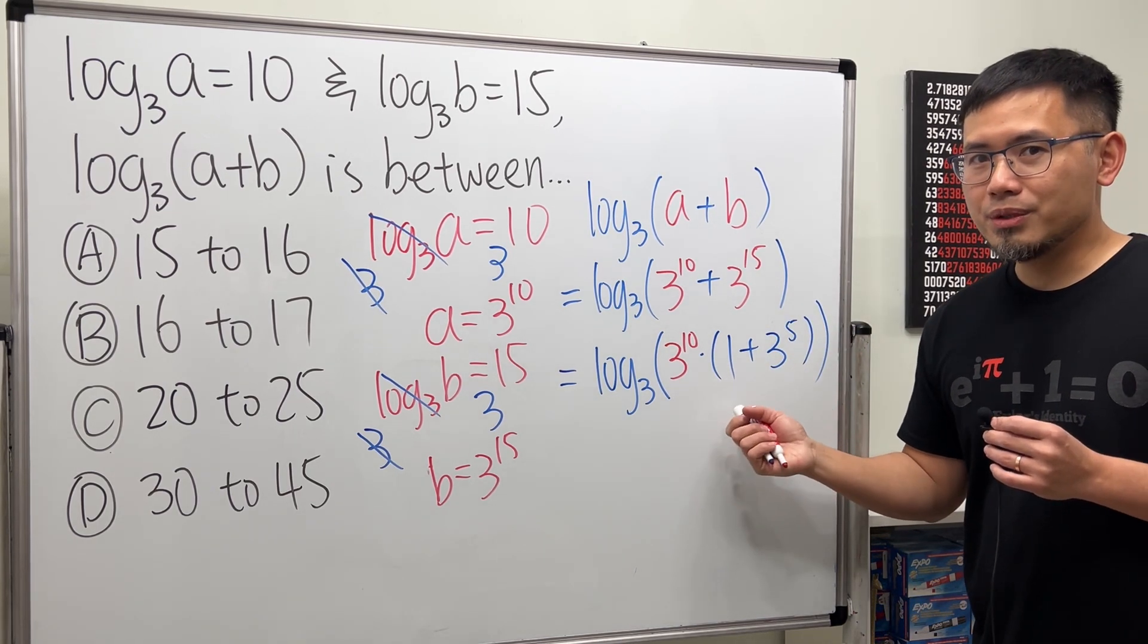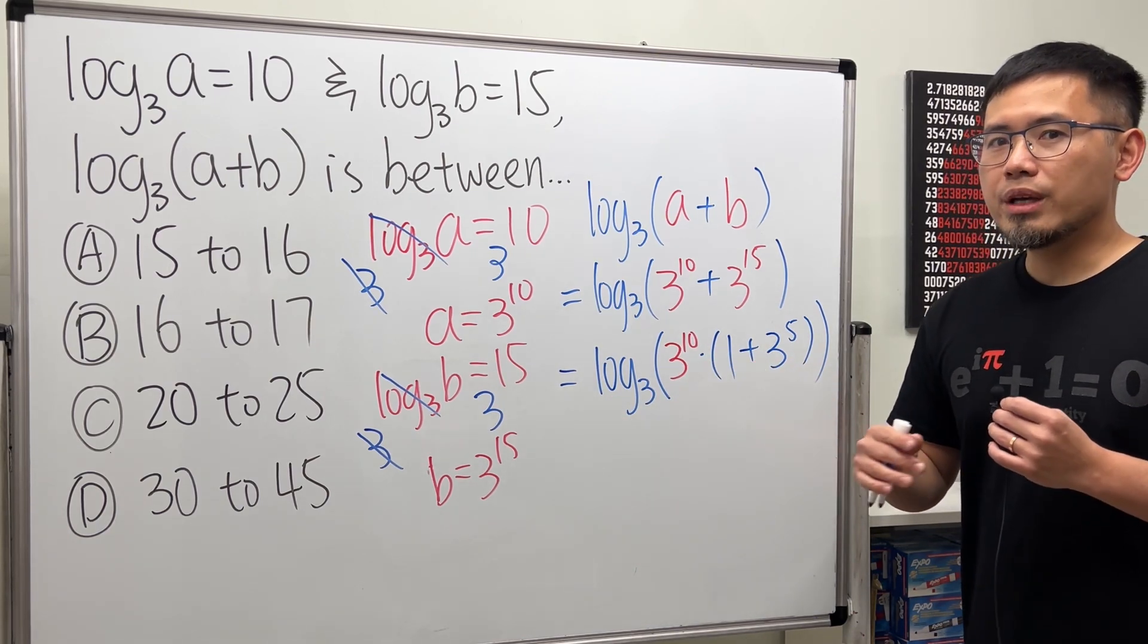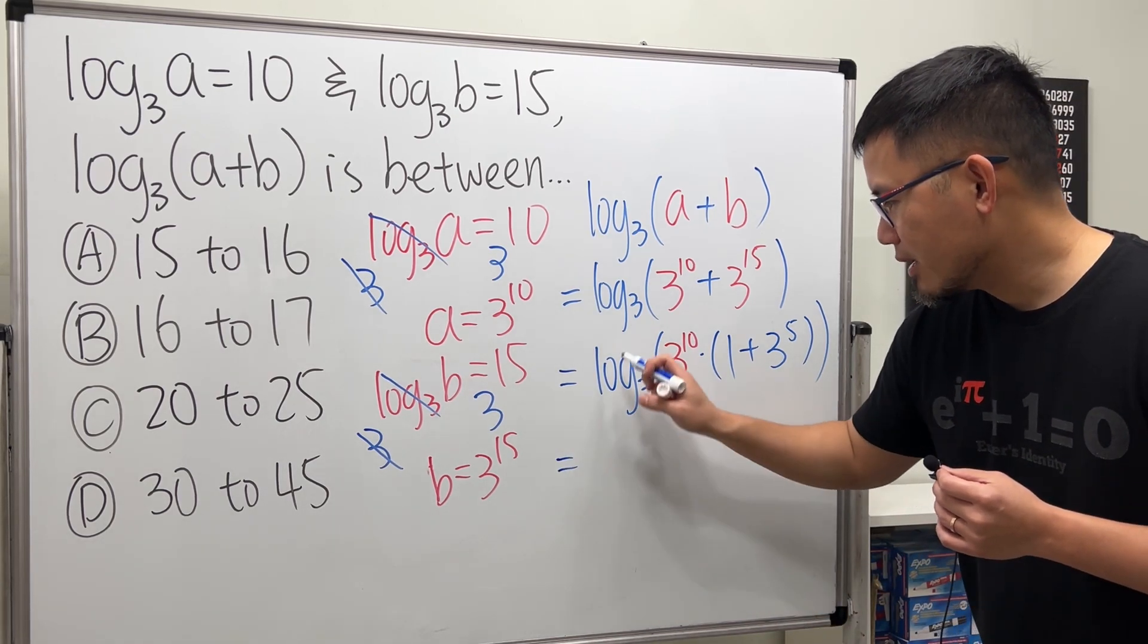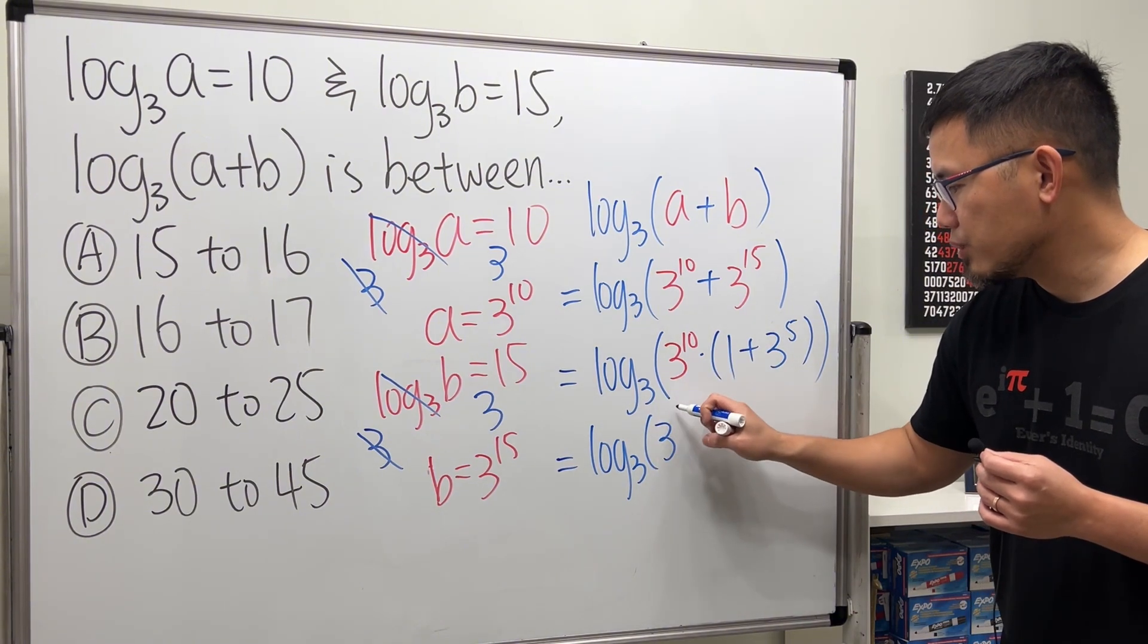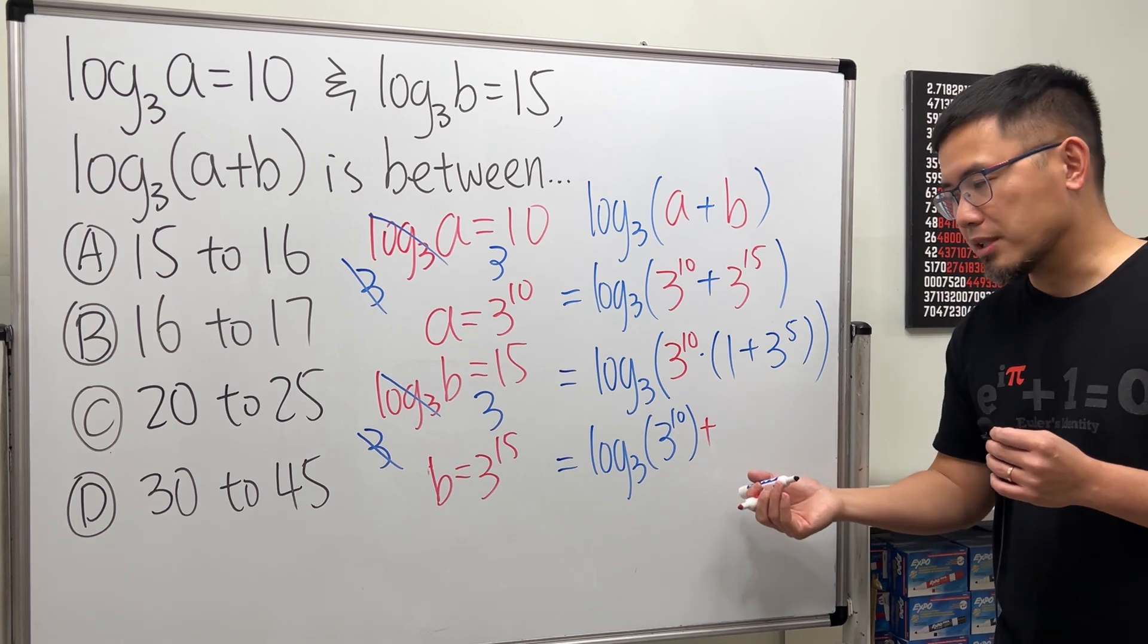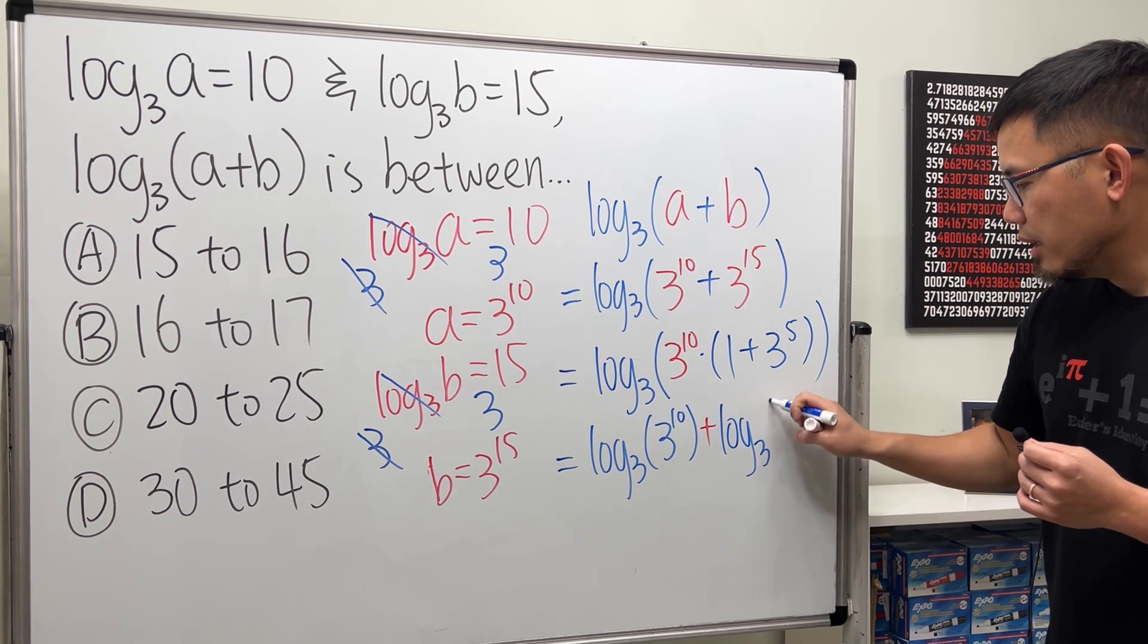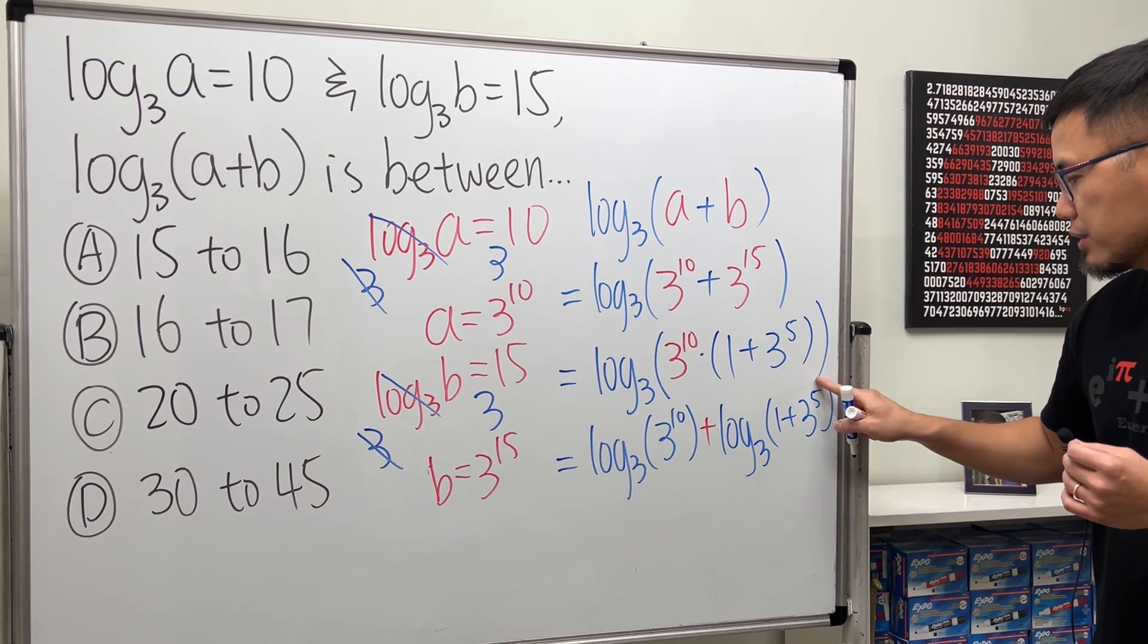And the reason that we do this is because now we have a log of a product, right? This times that. We can break it apart as a sum. So this will become log base 3 of the first, which is 3 to the 10th. And then we are going to add, right? It's just going to be a sum of two logs. Another log, and this is still base 3, and then the second term, which is 1 plus 3 to the 5th. Just like that.